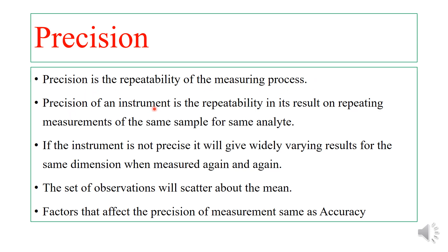Precision is the repeatability of the measuring process. The precision of an instrument is the repeatability of its results when measuring the same sample for the same analyte again and again. If the instrument is not precise, it will give widely varying results for the same parameter — the observations will scatter about the mean but will not be close to the true value. The factors that affect the precision of measurement are similar to those affecting accuracy.